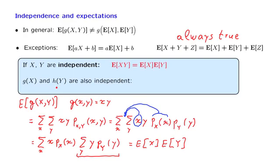Intuitively, the value of x does not give you any new information about y. So the value of g of x does not give you any new information about h of y. So on the basis of this intuitive argument, the functions g of x and h of y are also independent of each other.